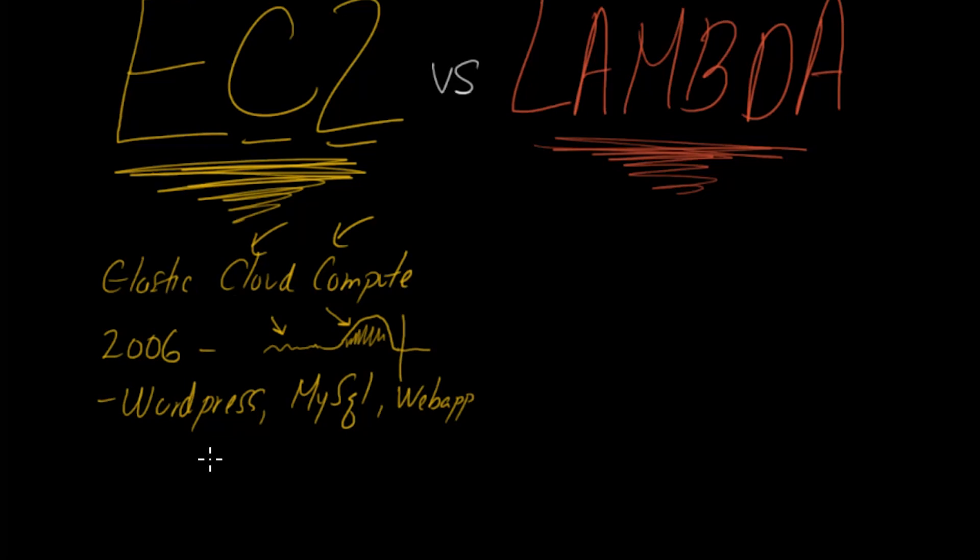You can use these machines to host a WordPress site, or host a MySQL database, or make a web app or a backend for a web app. You're flexible here, you can do whatever you want. When you're using EC2 machines, you're the owner, you're managing them. You need to worry about security vulnerabilities and CPU utilization, memory utilization, disk space.